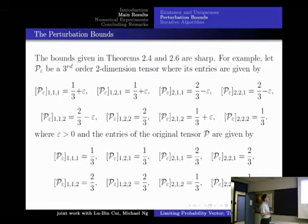Now we give an example to illustrate that the results in Theorem 2.4 and 2.6 are sharp. The bounds given in Theorems 2.4 and 2.6 are sharp. For example, let P be a third-order four-dimensional tensor where gamma is larger than 1, and the entries are given by...